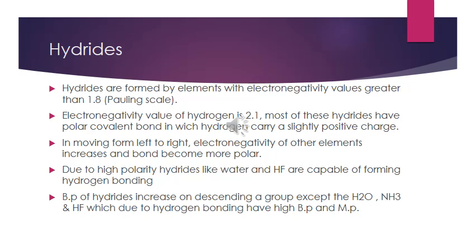Which elements form hydrides? Those elements whose electronegativity value is more than 1.8. Hydrogen's electronegativity value is 2.1, so most hydrides have polar covalent bonds, with a slightly positive charge on hydrogen. Moving left to right in periods, electronegativity increases, so the bond polarity increases. In compounds like water and HF, due to high polarity and the presence of hydrogen, hydrogen bonding occurs.